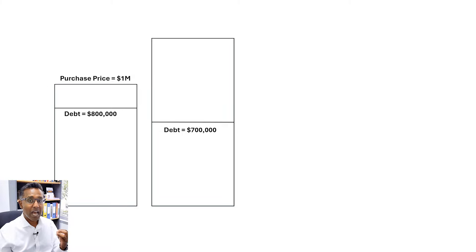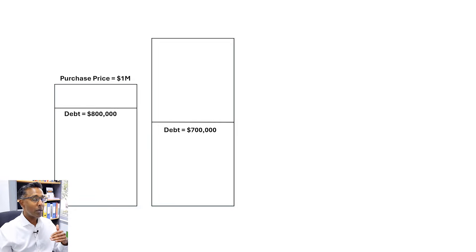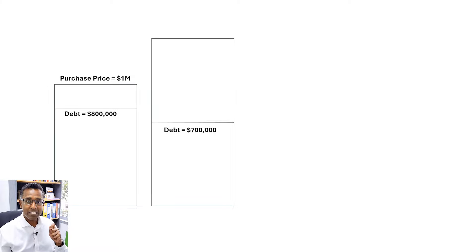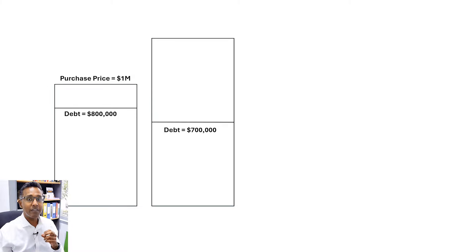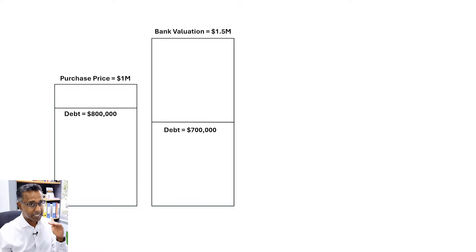So the question is, how do you work out how much equity you have on this particular property? Well, the first thing is you need to know what the property is worth. If you look around and see similar properties selling for $1.6 million or $1.7 million, that's a great ballpark figure, but you can't use that figure in this situation. Instead, you need to go and get a bank valuation, and expect that the bank valuation will come in a little bit lower than what you think you can sell the property for in the open market.